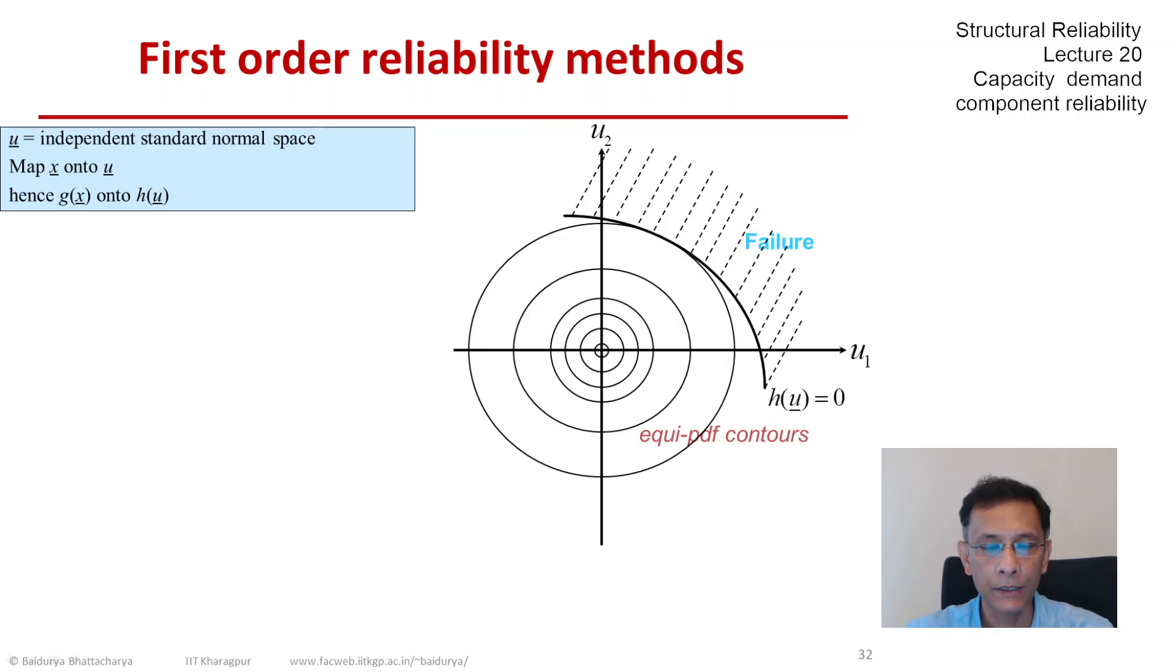Pictorially, this is what looks like in two dimensions. The equipdf contours are concentric circles around the origin and the failure region is clearly marked with dashed lines.